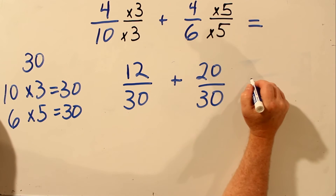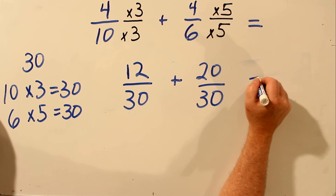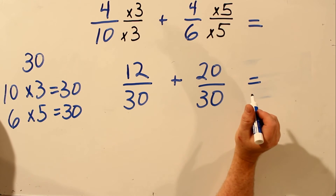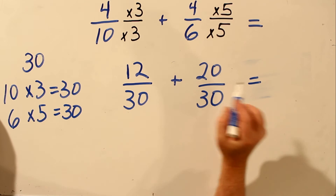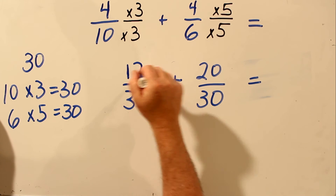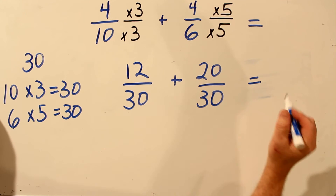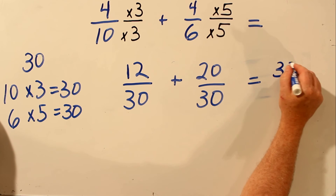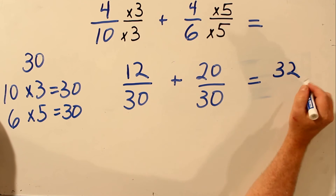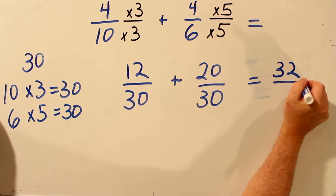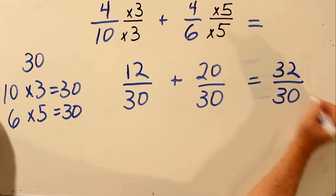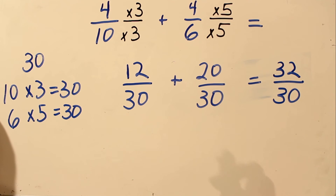And now we can add these two fractions because they're both over the same number. We add across the top: 12 plus 20 is 32, and keep the bottom number the same. 32 over 30 is the answer.